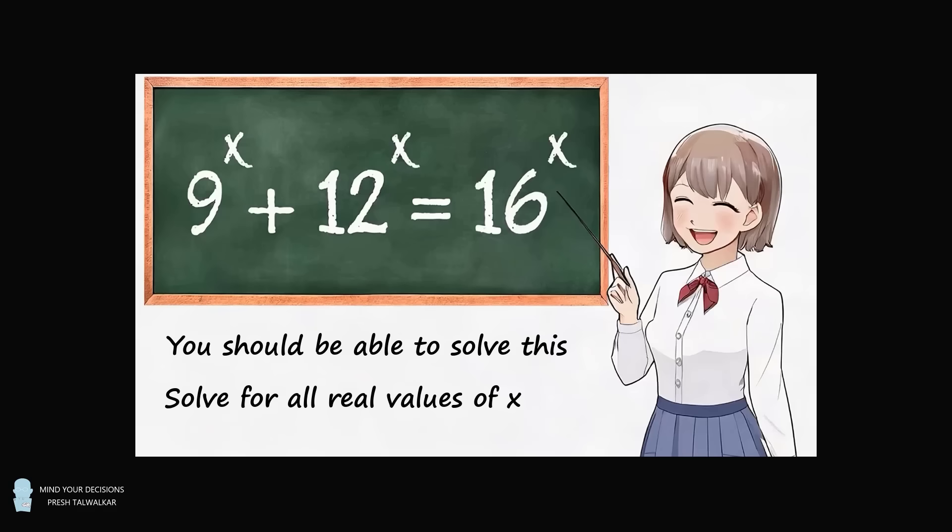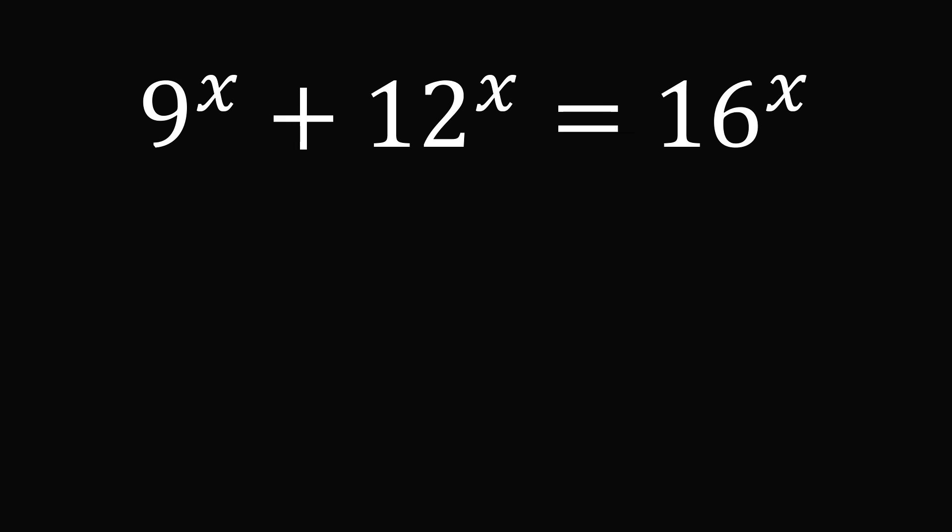So how do we figure it out? We have the equation 9^x + 12^x = 16^x. We want to reduce this equation into something familiar. Let's get started by simplifying and dividing both sides by the very first term. We will divide the entire left side by 9^x, and correspondingly divide the right side by 9^x.